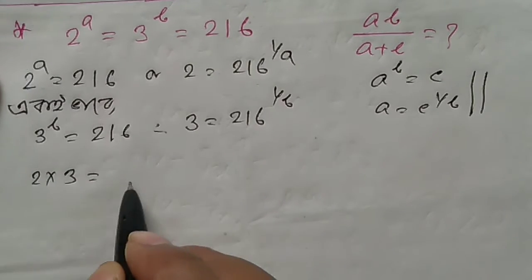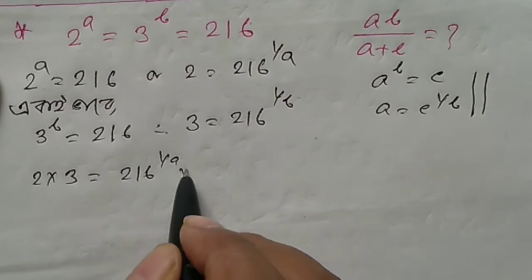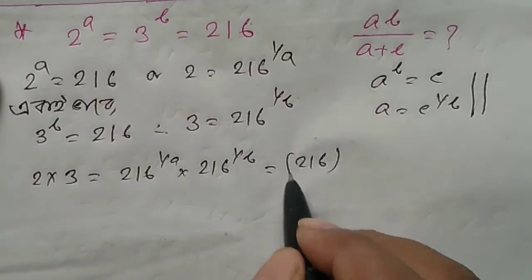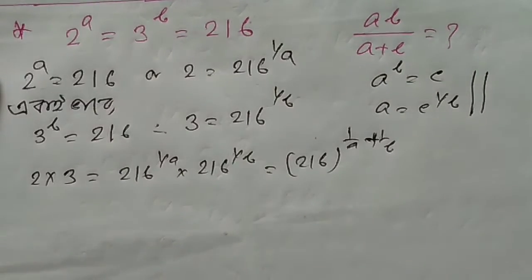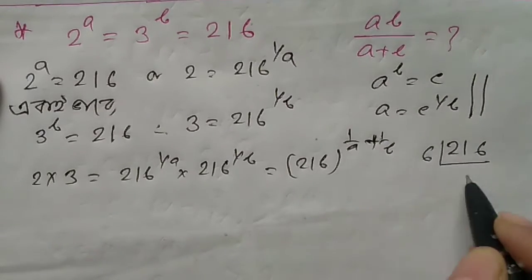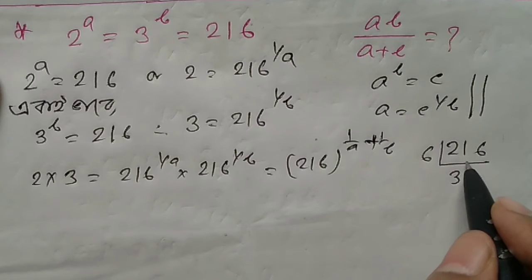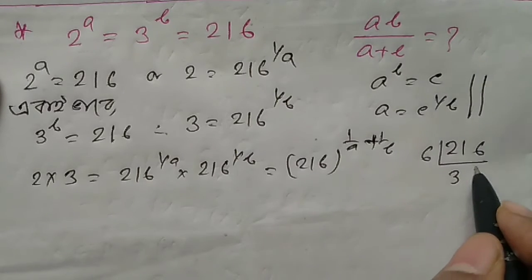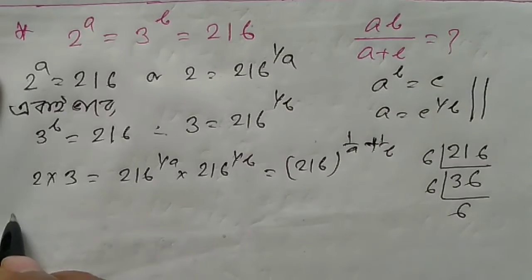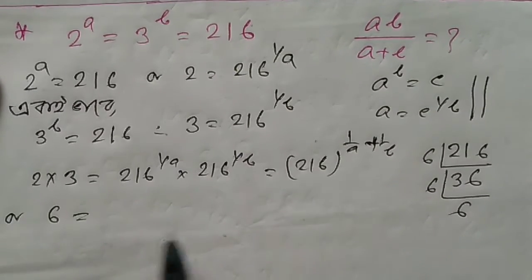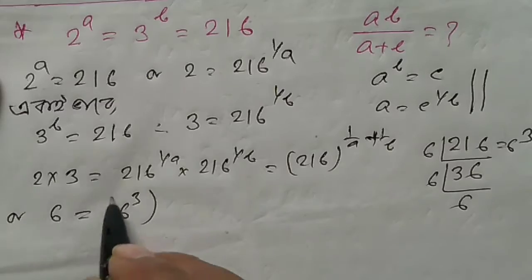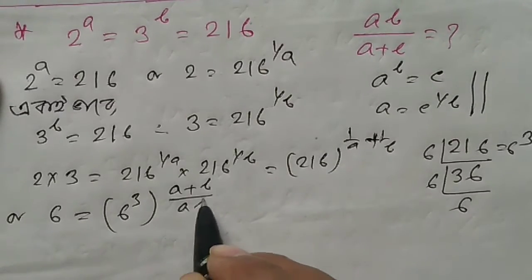Multiplying: 2 times 3 equals 216 to the power 1 by A plus 1 by B. This gives 6 equals 216 to the power (A plus B) by AB. Since 216 equals 6 to the power 3, we have 6 to the power 3 to the power (A plus B) by AB.